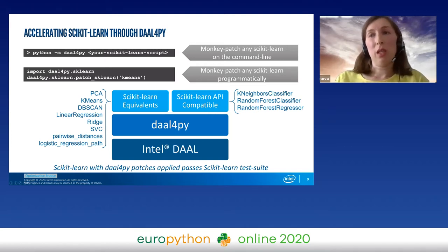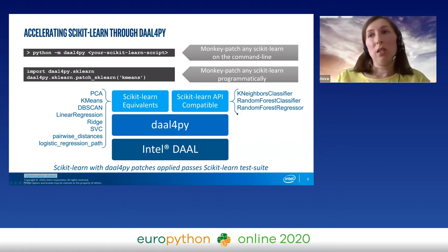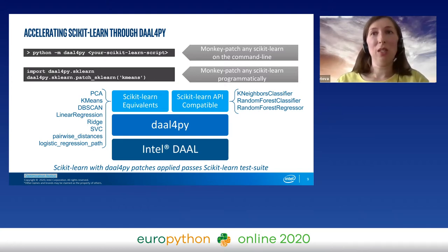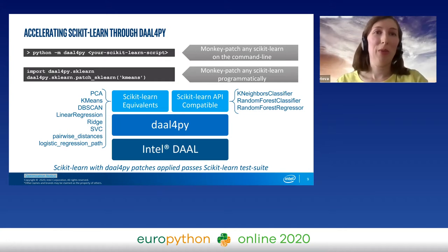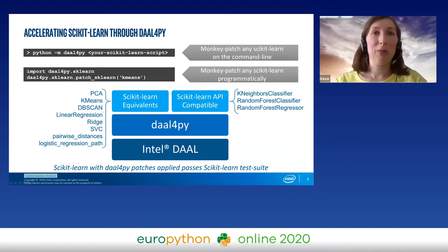On the right, you can see algorithms that have an identical API with scikit-learn but do not pass compatibility tests. This doesn't mean those algorithms are incorrect — for some it's just hard to pass the tests. For example, for random forest, it's hard to build trees with the same depth as scikit-learn due to the random nature of the algorithm. We constantly work on adding new algorithms and moving algorithms from the right list to the left by making them pass compatibility tests, which is actually the trickiest part.